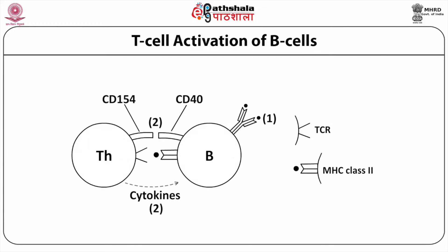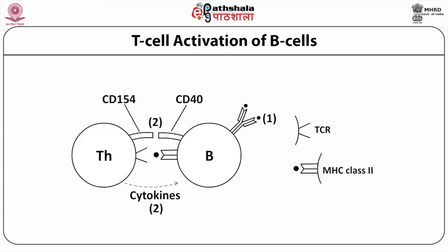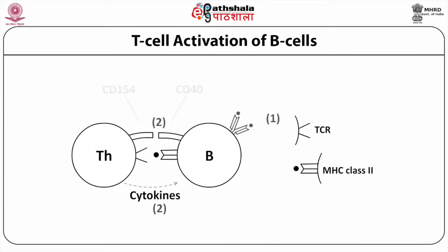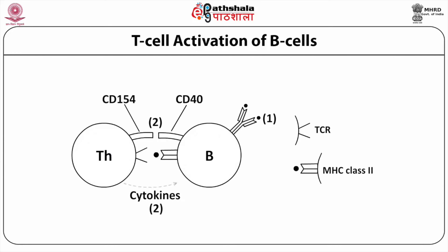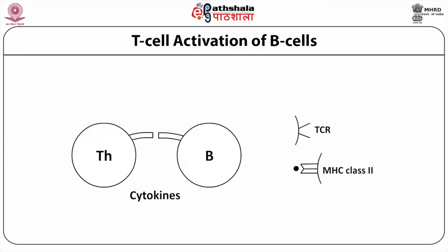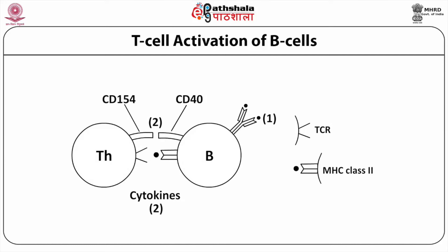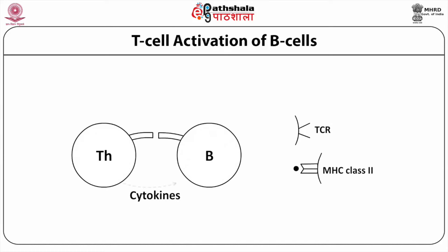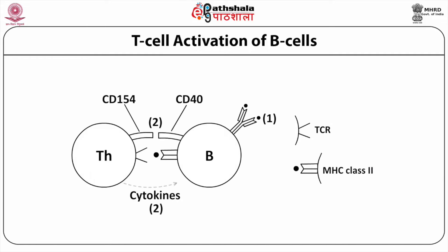Transfection of a B cell by cDNA for H chain and L chain resulted in the chains remaining inside the cell, but simultaneous transfection with cDNA of Igα and Igβ chains resulted in assembly of the Ig plus Igα plus Igβ complex on the B cell surface. Igα and Igβ have cytoplasmic domains of adequate size for signal transduction. Binding of antigens to B cell surface immunoglobulins provides the first signal — but this signal alone is not enough for Td antigens; if a second signal is not available, B cells become anergic. TH cells provide the second signal, which has two components: CD40 on B cells binding to CD154 on TH cells, and TH cells releasing cytokines after CD40-CD154 interaction.